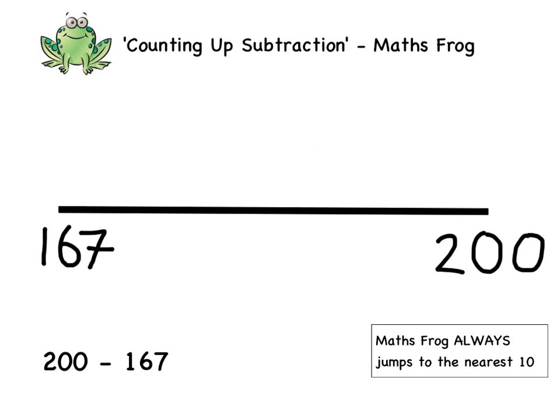Now remember, MathsFrog always jumps to the nearest 10 and always starts at the smallest number. In this subtraction, the smallest number is 167, so we're going to jump to the nearest 10 from 167.